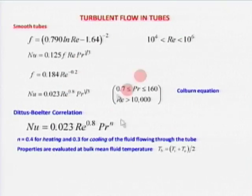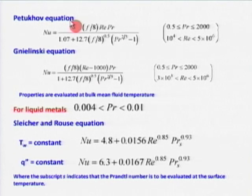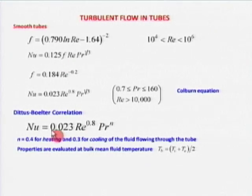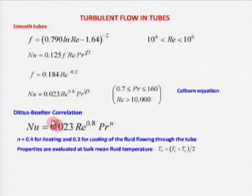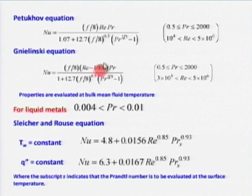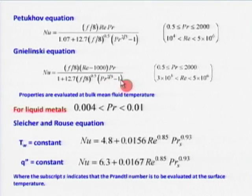We have stated correlations for both laminar and turbulent flow in pipes. Another important correlation is the Gnielinski correlation. Dittus-Boelter works well for gases, while Gnielinski works well for liquids. This was learned the hard way — when measuring for water, Dittus-Boelter never matched well, but Gnielinski gave correct results.